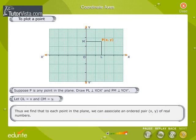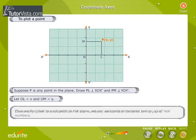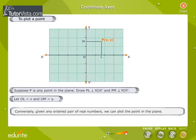Thus we find, to each point in the plane we can associate an ordered pair (x, y) of real numbers. Conversely, given any ordered pair of real numbers, we can plot the point in the plane.